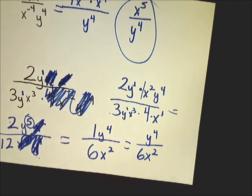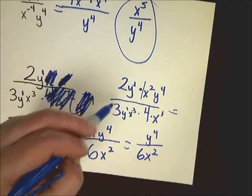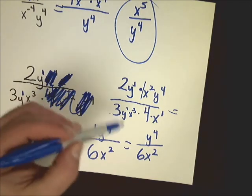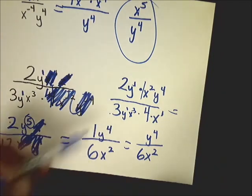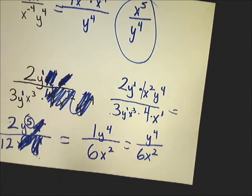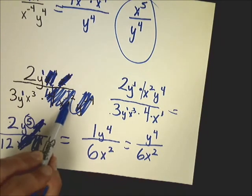The big thing that you need to worry about here is just making sure that you add your ones so you can see them, eliminate any terms with zero exponent, and then move things around before you start multiplying them together.